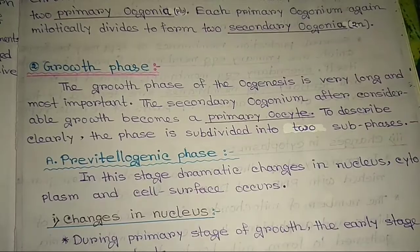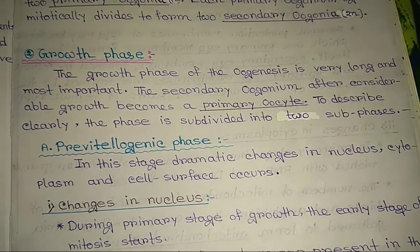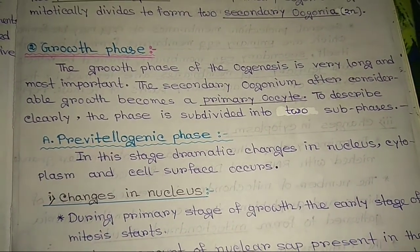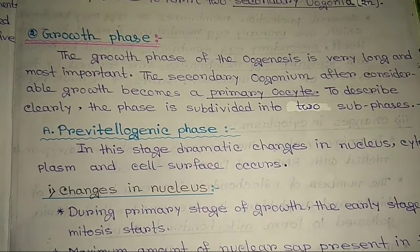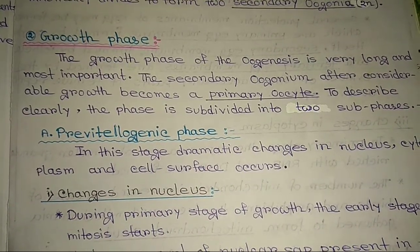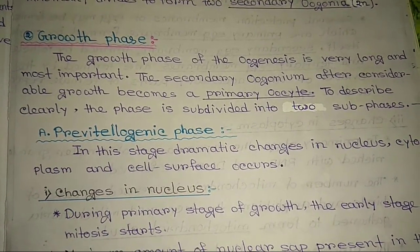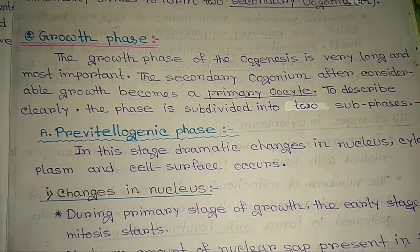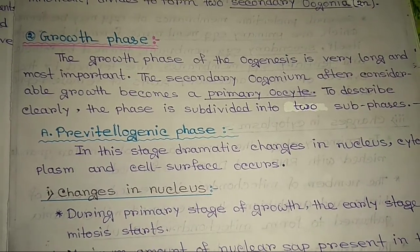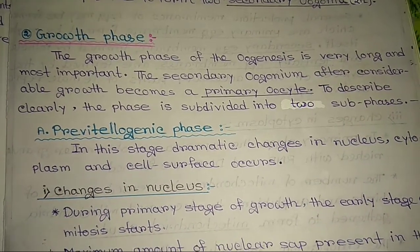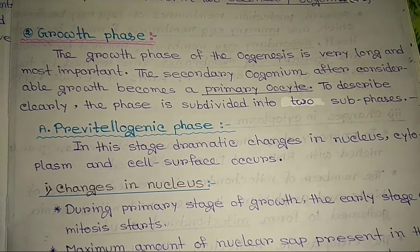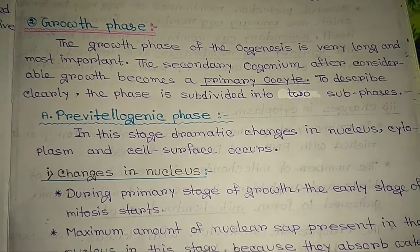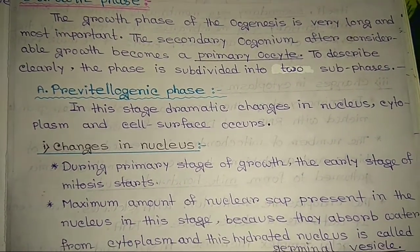The next phase is the growth phase. The growth phase of oogenesis is very long and most important. The secondary oogonia, after considerable growth, become a primary oocyte. This phase is subdivided into two sub-phases: first, pre-vitellogenic phase, and second, vitellogenic phase.